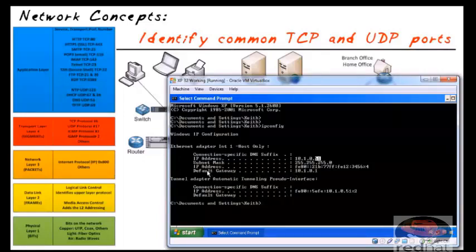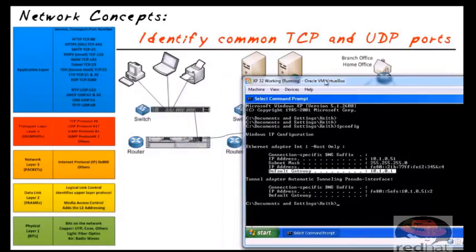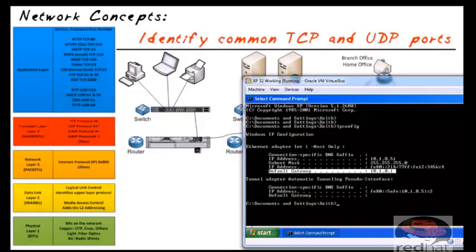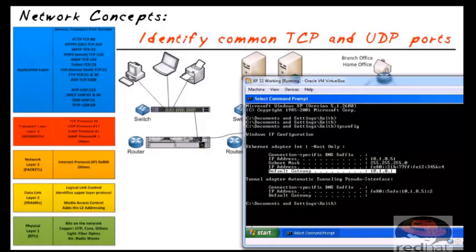We also have information on the default gateway. The default gateway is the PC's way of saying: I know how to reach the 10.1.0 network, but if I need to reach somebody outside my local network, I'll use my default gateway. He won't change the layer 3 destination IP — that stays as Google's IP — but at layer 2, he'll put the destination MAC address of the router so the router can de-encapsulate it, look at layer 3, and make a routing decision.